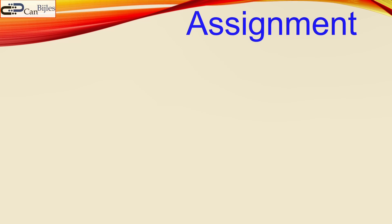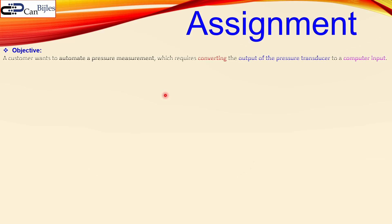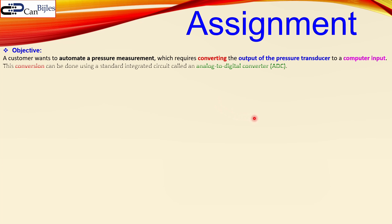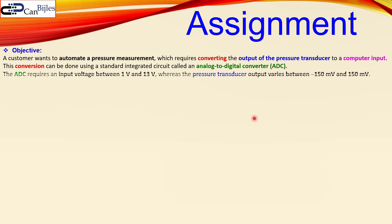Let's look at our assignment. The assignment is given as an objective: we have a customer that wants to automate a pressure measurement, which requires converting the output of the pressure sensor or transducer to a computer input. This conversion can be done using a standard integrated circuit — an analog-to-digital converter — which converts the analog signal to a digital signal. The ADC requires an input voltage between 1 volt and 13 volts, and the pressure sensor gives an output between minus 150 millivolts and plus 150 millivolts.